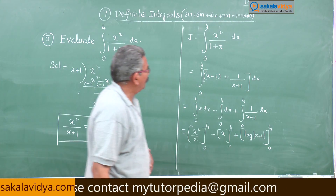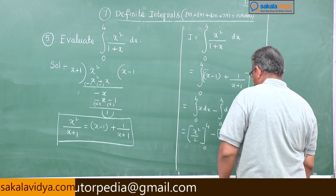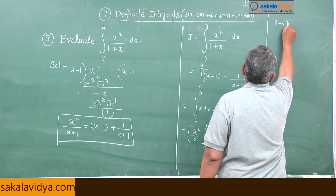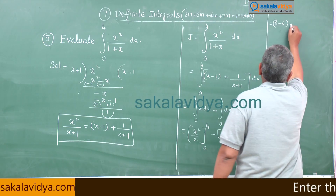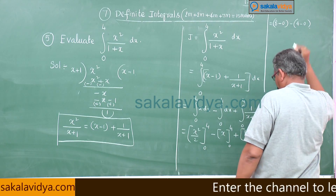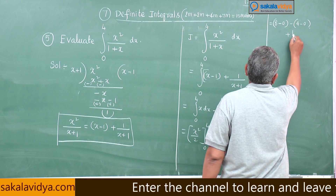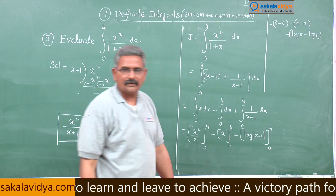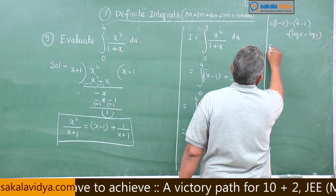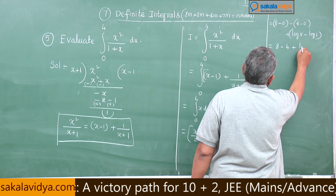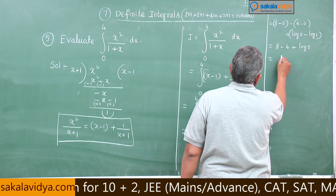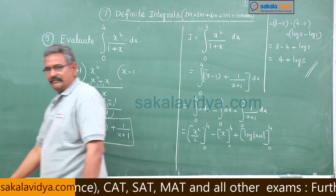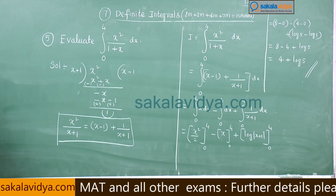Substituting the limits: 16 by 2 equals 8, minus 0; then 4 minus 0; plus log 5 minus log 1. This gives 8 minus 4 plus log 5, since log 1 equals 0. The answer is 4 plus log 5.